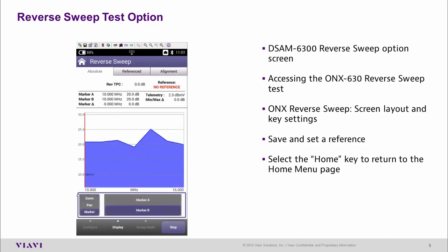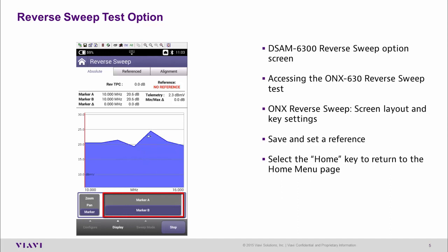Here we can see the reverse sweep test running and the results now being displayed on the screen. There are a couple of things we might want to do here. The first is we might want to move the markers to help us identify the frequency range and the difference on the peak you can see on the screen.